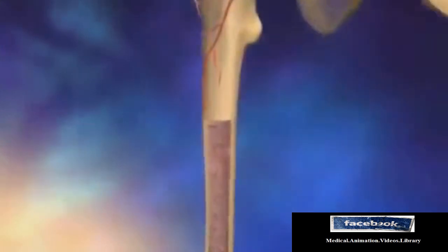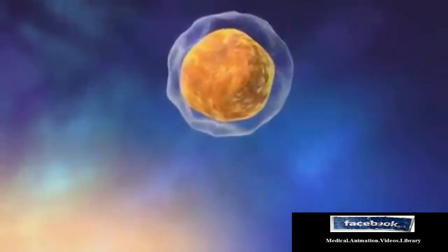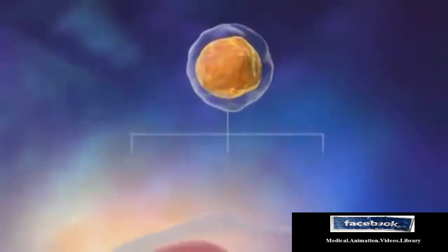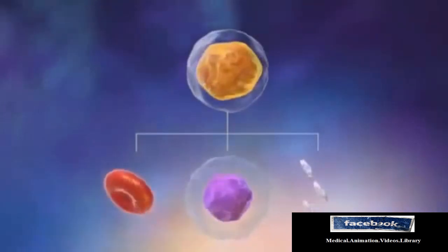Inside the hollow area of the bones is a spongy core called bone marrow. It is here that stem cells are produced. Stem cells are immature cells that can develop into components of blood.